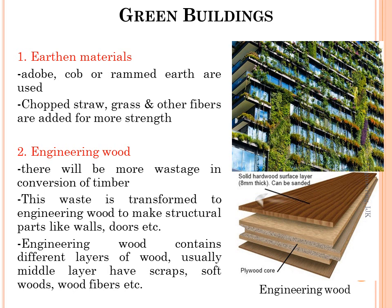The first green building material is earthen materials. Earthen materials like adobe, cob and rammed earth are used for construction purposes. Adobe and cob are sun-dried earth materials. Cob is dried soil mixed with straw. For good strength and durability, chopped straw, grass and other fibrous materials are added to these earthen materials.